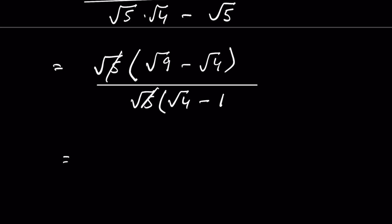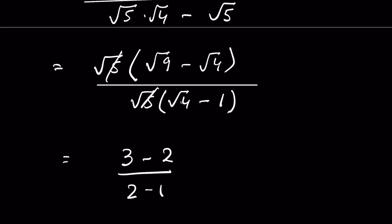Square root of 9 is 3 and square root of 4 is 2. So the numerator is 3 minus 2, and the denominator is 2 minus 1. That gives 1 over 1, so the answer is 1.